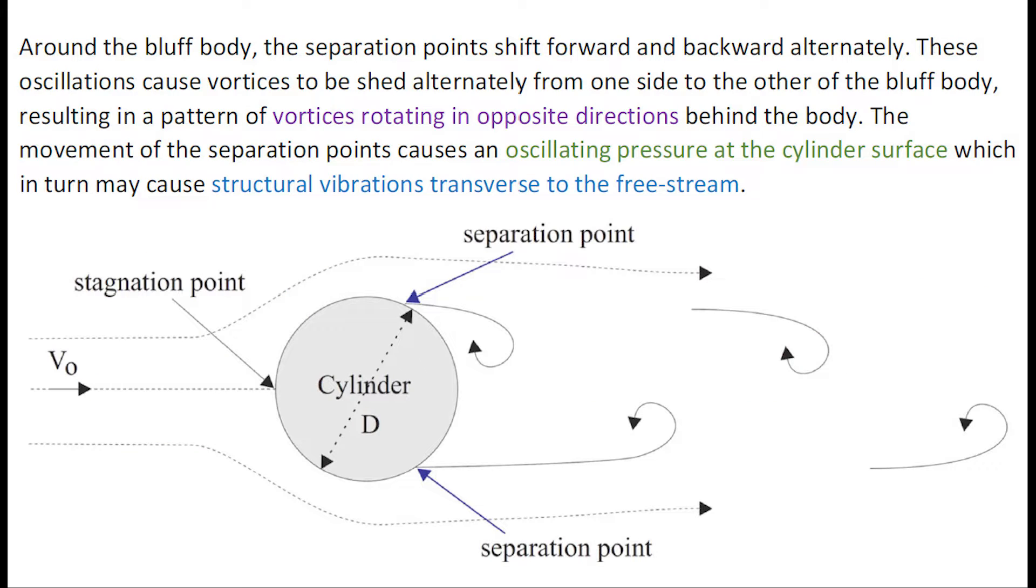Around the bluff body, the separation points shift forward and backward alternately. This oscillation causes vortices to be shed from one side to the other.